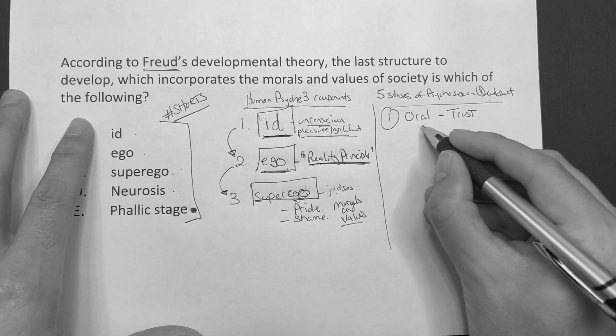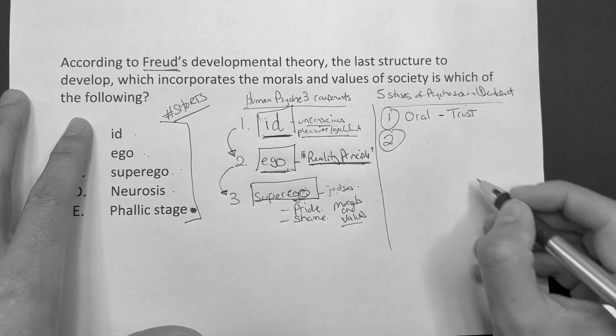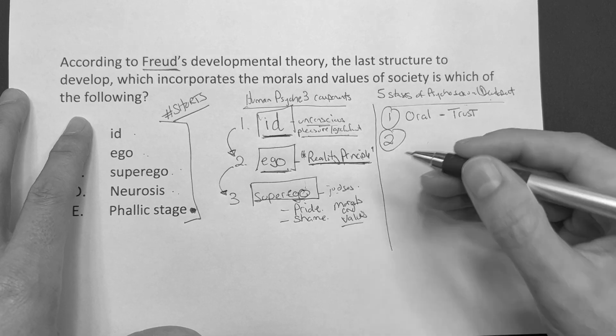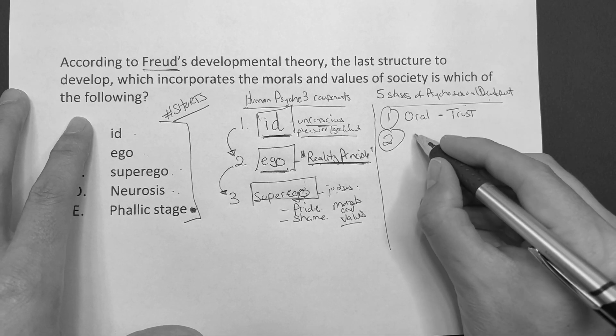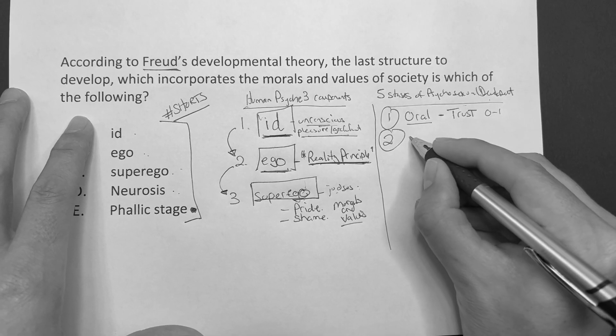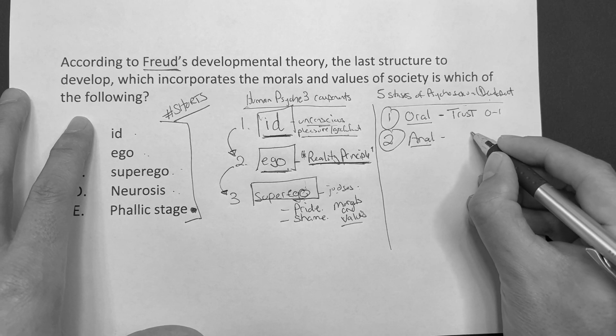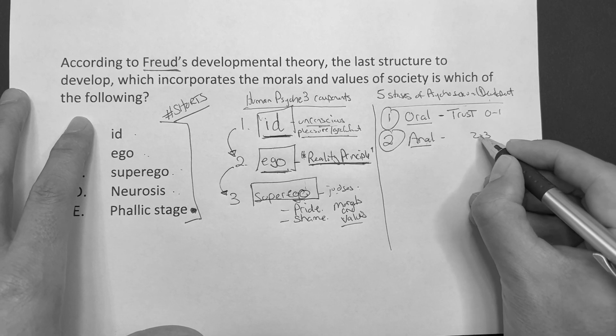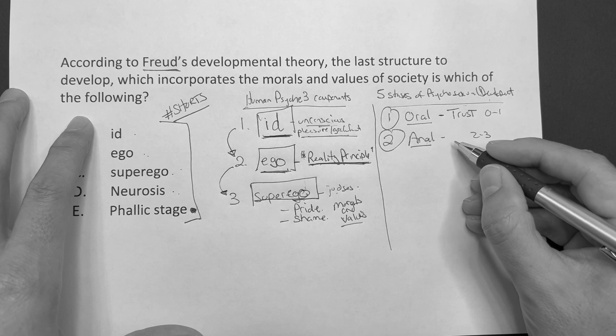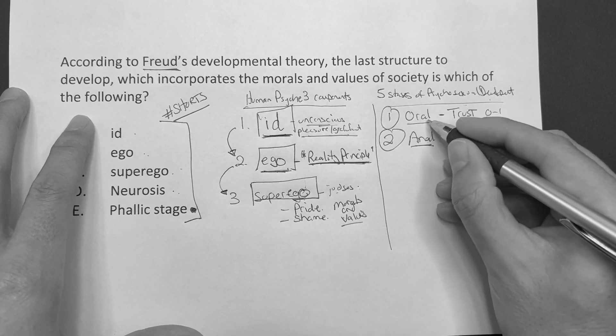And then the next stage, before I get back into what happens if you don't quite get through these stages, what happens. So we have the oral stage, and then that's basically from zero to one. We have the anal phase, right? Because now the kids, you're in this two to three years of age, you're trying to potty train, control the bowel and bladder. That's the anal phase, right? So far pretty self-explanatory.